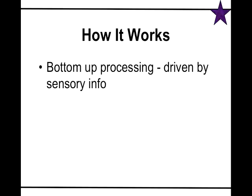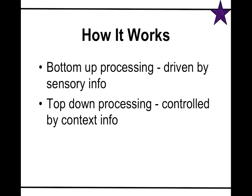Bottom-up processing is everything driven by sensory information — here's all the sensation, and perception builds up from it. Top-down processing is the reverse: things are driven by the context of the situation. We do both interchangeably — there's no case where it's all bottom-up or all top-down. This video covers the rest of bottom-up processing, and top-down processing will be covered in the next video.